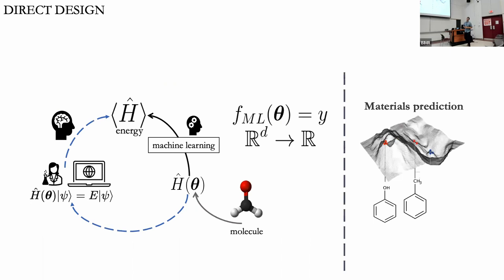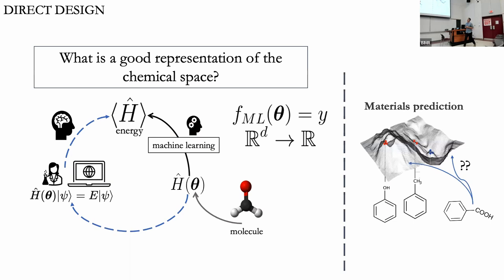We're going to start with direct design. If we have a molecule, we can run experiments or computer simulations and compute the energy. If we have enough data points, we can try to do regression. But what is a good representation of our chemical problem? Is it robust enough that you can plug in a molecule that we haven't seen before and get a meaningful answer? I tell the students of 4PB3 that this is the real central question — it's not well defined how to represent a molecule in a computer.